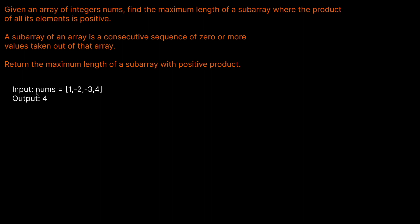Let's look at our nums array and try to figure out why the solution is four. If we just take a subarray of one, that has a positive product because it's just one, so the length could be one. Now what if we took one and two? That's minus two, so that wouldn't work because that's negative. Our product has to be positive. So what if we added the minus three? We can multiply minus two times minus three and get six, which is positive. Since this is longer, we want this — our best solution so far is three.